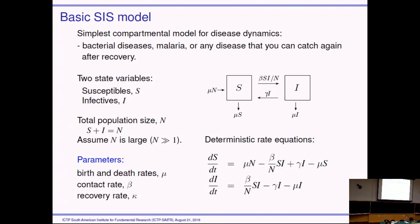You guys all know this because you're physicists — this is just differential equations. This is the standard model used in epidemiology: a susceptible and infective model. The whole population is two compartments with flux between them. There's a mass action term where infectious come into contact with susceptibles with contact rate beta — that's your probability of catching the disease. You have a recovery rate gamma where infectious go back to susceptibles, and you can catch it again. This is the simplest compartmental model, applicable for bacterial diseases, malaria, or any disease you can catch after recovery.